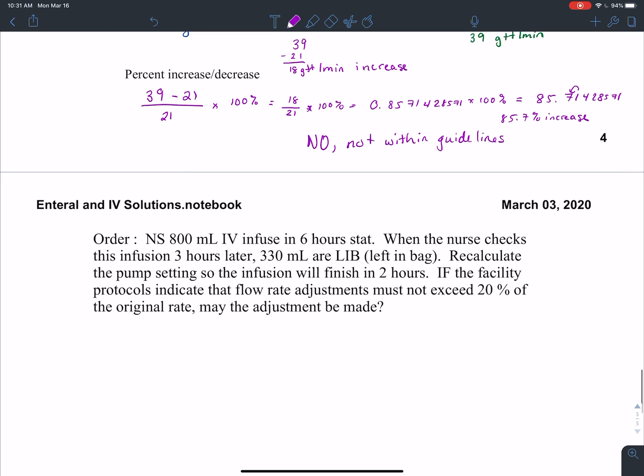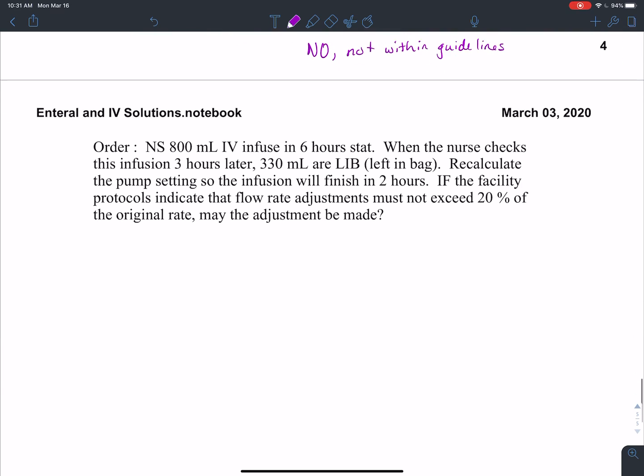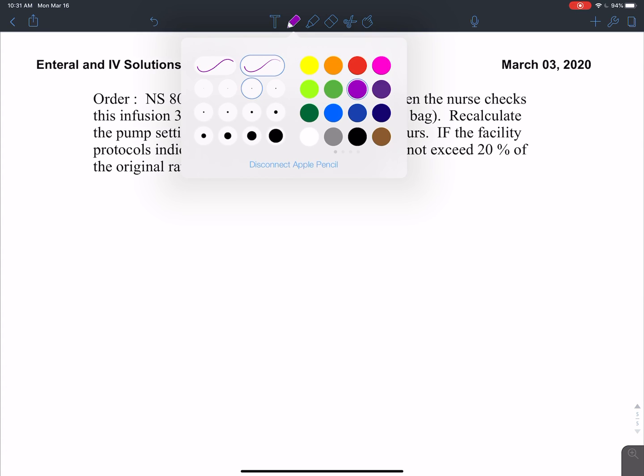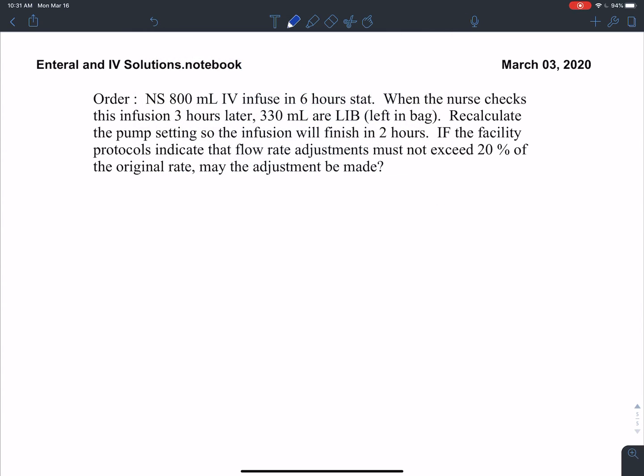The next example also deals with adjustments. So we have an order for normal saline, 800 milliliters infused at six hours stat. When the nurse checks the infusion three hours later, 330 milliliters are LIB left in bag. Recalculate the pump setting so the infusion will finish in two hours. If the facility protocols indicate that flow rate adjustments must not exceed 20% of the original rate, may the adjustment be made?